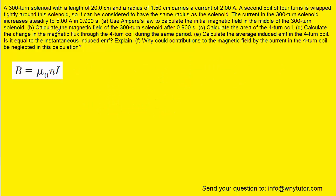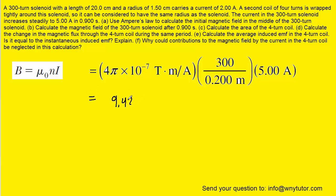In part B, we're asked to calculate the magnetic field of the 300-turn solenoid after 0.9 seconds. We were told after 0.9 seconds, the current has increased to 5 amps. So we can basically use the same equation, but this time plug in a current of 5 amps. We've gone ahead and plugged in the known information, this time using a current of 5 amps. When we compute this magnetic field, we get approximately 9.42 times 10 to the minus 3 Tesla. This would be the correct answer to part B.